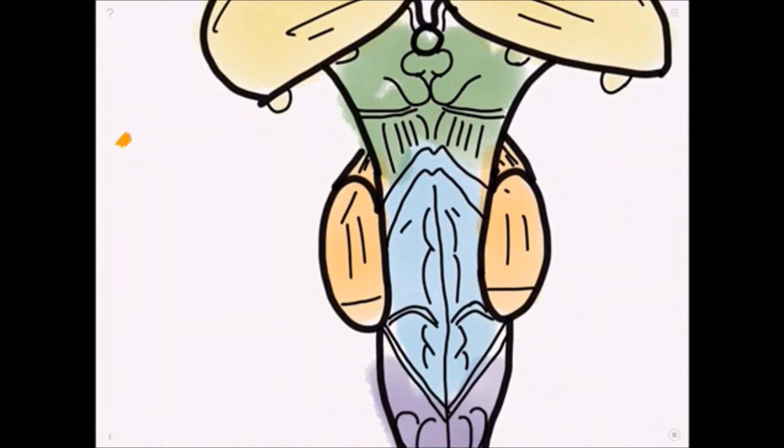First of all, we have the special visceral efferent nuclei, and the nerves from here innervate muscles which are derived from the branchial arches during development.